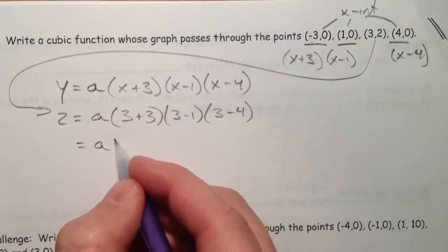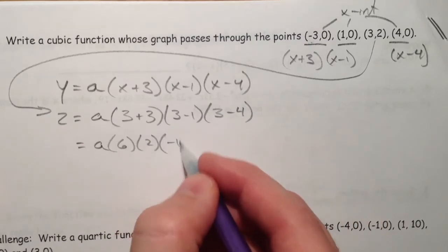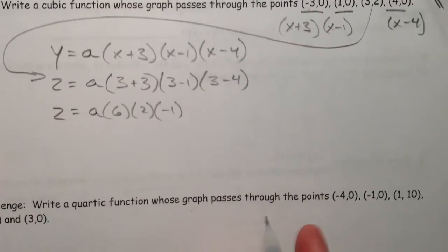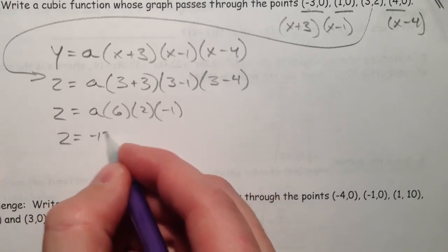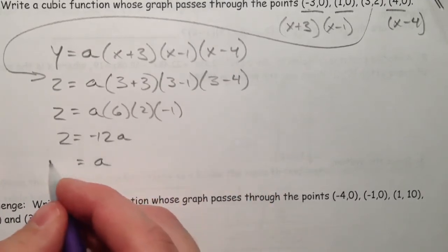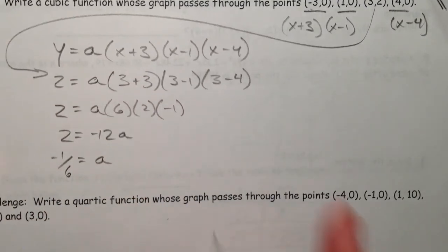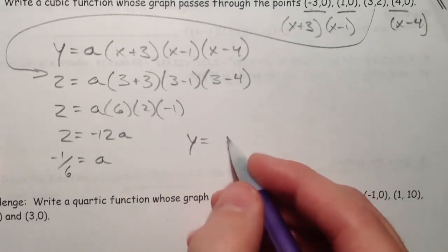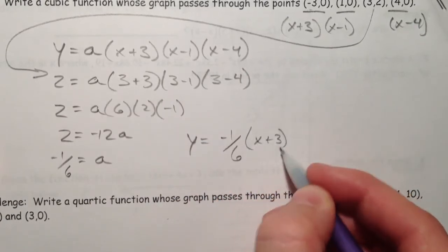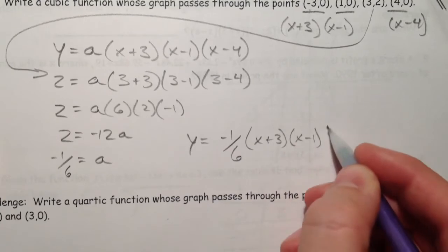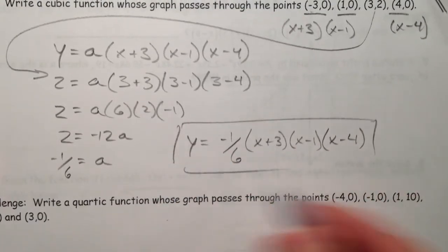So, 6 times 2 times negative 1. And so, this is negative 12. So, a is negative 1 sixth. 2 twelfths, 1 sixth. So, our equation is negative 1 sixth times all of this. Now, I would just leave it in factored form like this because it's much more beneficial.